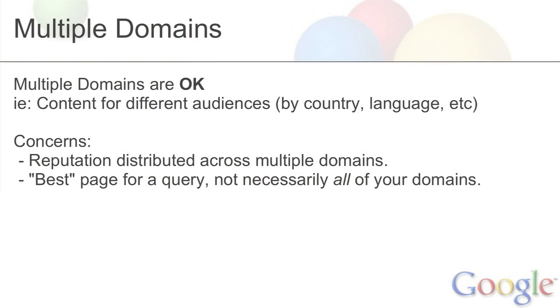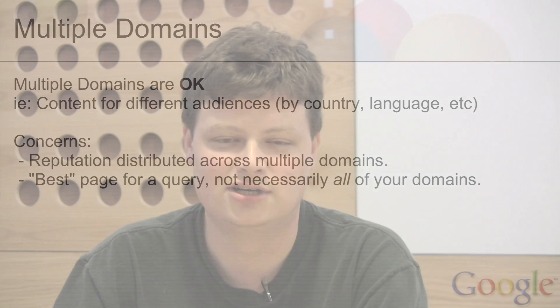Also, Google tends to pick only one of the domains for a single query — we're going to pick the one that's best. So if you have content on two different domains in the same language, say an Australian version and a British version of the same page, both in English on different domains, we might notice the content is more or less the same and we're going to only pick one. Most of the time we're going to get exactly the one you'd want — the .co.uk for the British and .com.au for Australia. But in some cases we'll get it wrong. You can log into Webmaster Console and set each domain for a particular locale. But by splitting it up, you do run the risk of us getting it wrong every once in a while.